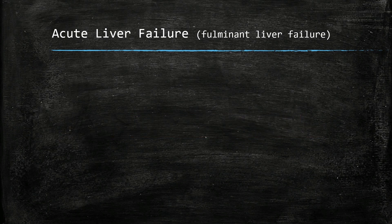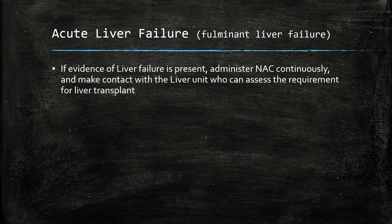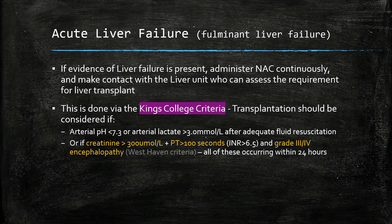If there is any indication of liver failure, administer NAC continuously and make contact with the liver unit, who can assess the requirement for liver transplant. This assessment is usually carried out using the King's College criteria. Liver transplantation should be considered if the arterial pH is less than 7.3, or arterial lactate is greater than 3 mmol/L after fluid resuscitation. Alternatively, if within 24 hours the creatinine exceeds 300 micromoles per litre and PT exceeds 100 seconds with grade 3 or grade 4 encephalopathy, then the patient needs a liver transplant.